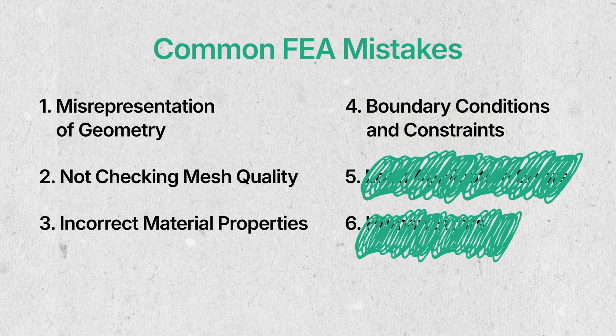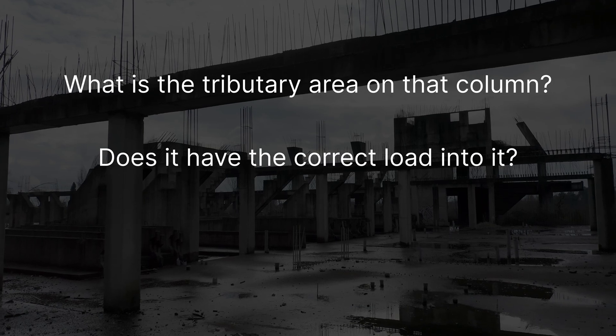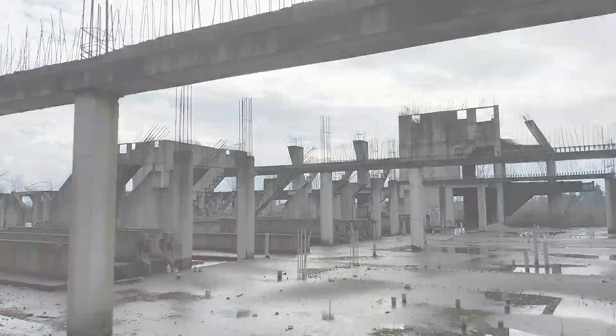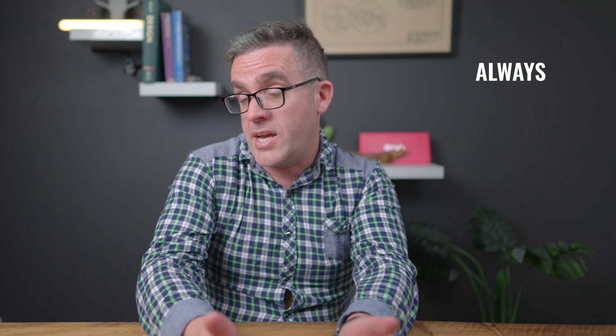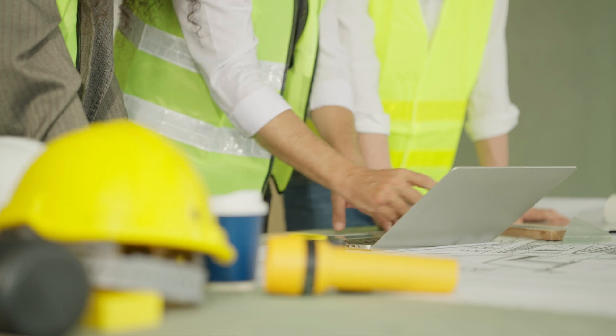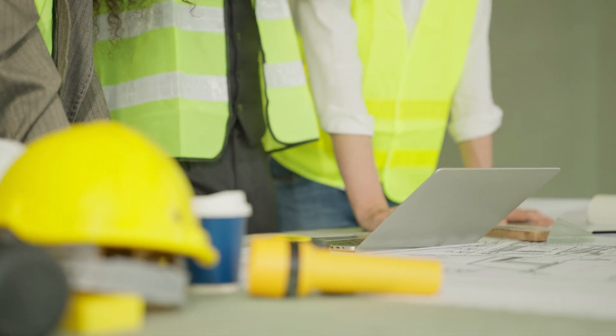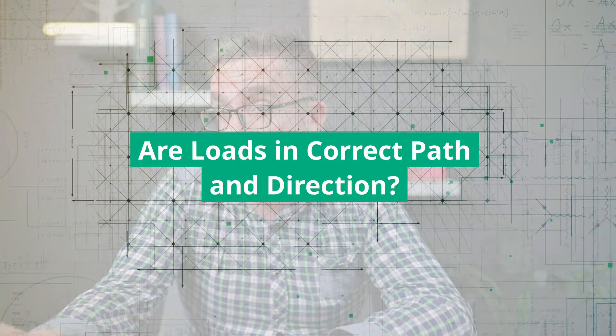Another mistake I pick up on all the time is checking those loads. Is it the correct load in the element? A simple hand check can double-confirm the load you're getting in the structure. What is the tributary area on that column — does it have the correct load? You should always have that check in your assessment: I've checked the stress in this column, my hand calc says it should be this high — if it's within 5–20%, that's okay. But if it's double, triple, or half — something's wrong. Make sure you're validating the loads are in the correct path and haven't applied the wrong order of magnitude.